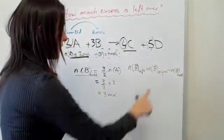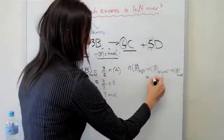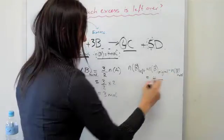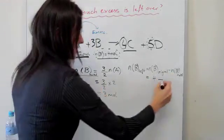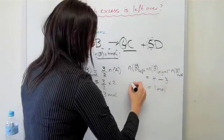We simply have the mole of B originally as 4, and then the mole of B reacted is 3, and then we end up getting 1 mole of B leftover.